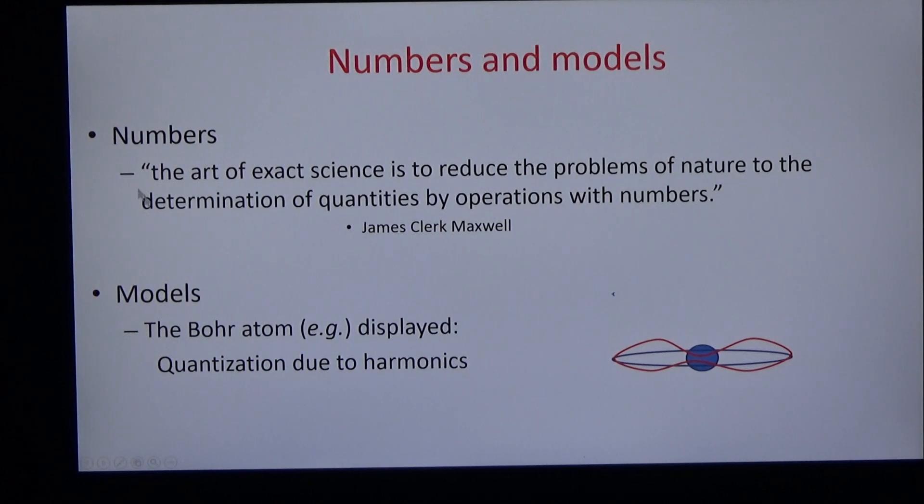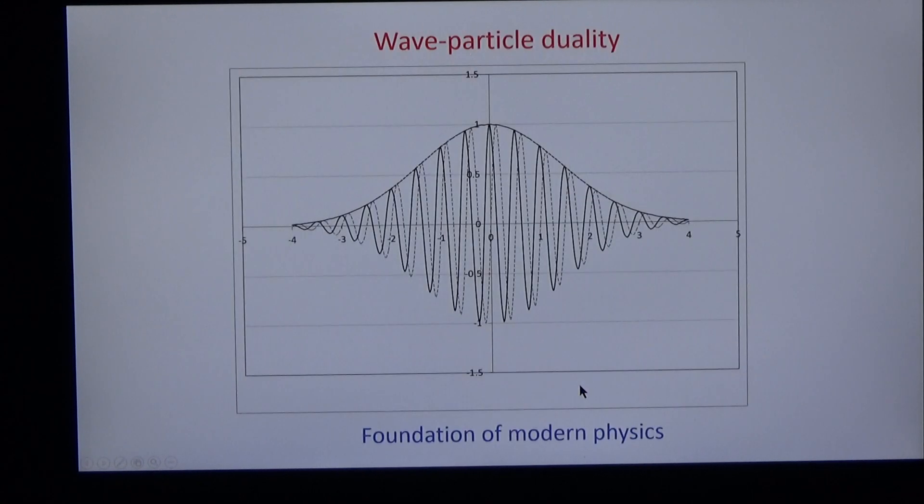We start with numbers and models. According to Maxwell, the art of exact science is to reduce the problems of nature to the determination of quantities by operations with numbers. And according to Bohr's model, quantization is due to harmonic waves in atomic orbitals.